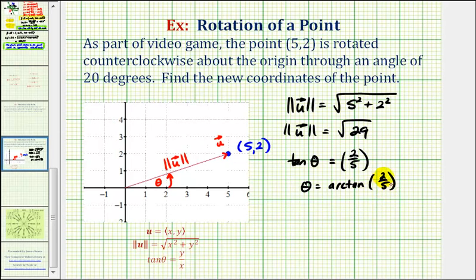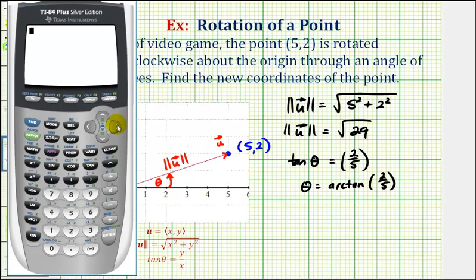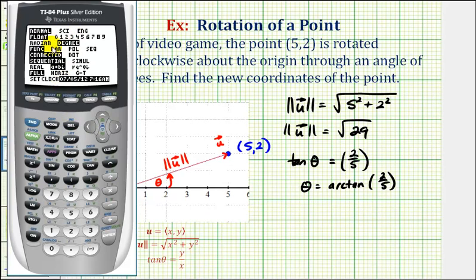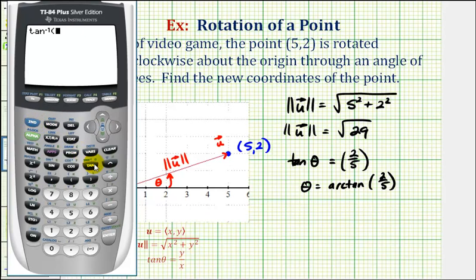Because this trig function value is not one that we find on the unit circle or using reference triangles, we'll have to use the calculator to get a decimal approximation for theta. We do want to make sure that we're in degree mode. So we'll press the mode key—we are in degree mode. Now we'll go back to the home screen, press second tangent, 2/5. So theta is approximately 21.8 degrees.